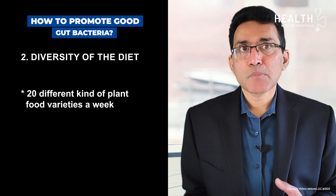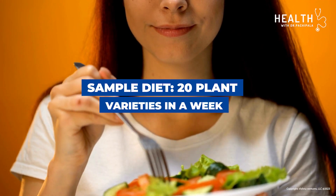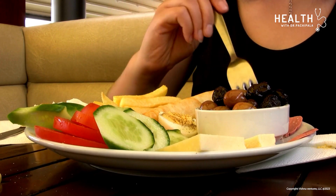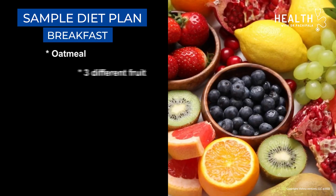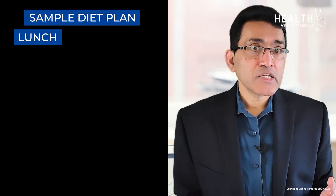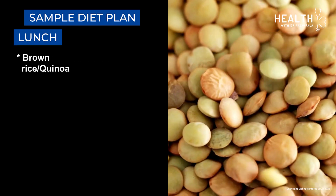Some experts recommend eating as many as 20 different kinds of plant-based varieties in a week, and we can easily eat 20 to 30 varieties a week. For breakfast, you can easily achieve 10 varieties by combining oatmeal, different fruits, different nuts, and yogurt.